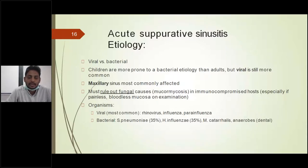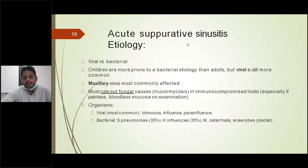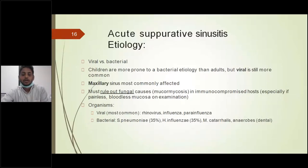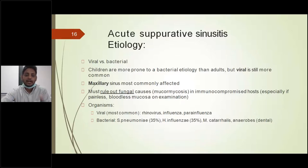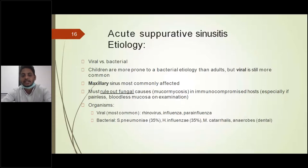From the MCQ point of view, if asked which sinusitis is most common, the answer is maxillary sinusitis. But if the question is specific to children and both maxillary and ethmoid options are present, you should opt for ethmoid sinusitis. If both options are present together, you may opt for both. If only a single option is given for children, opt for ethmoid sinusitis. In adults, maxillary sinusitis is the most commonly affected.